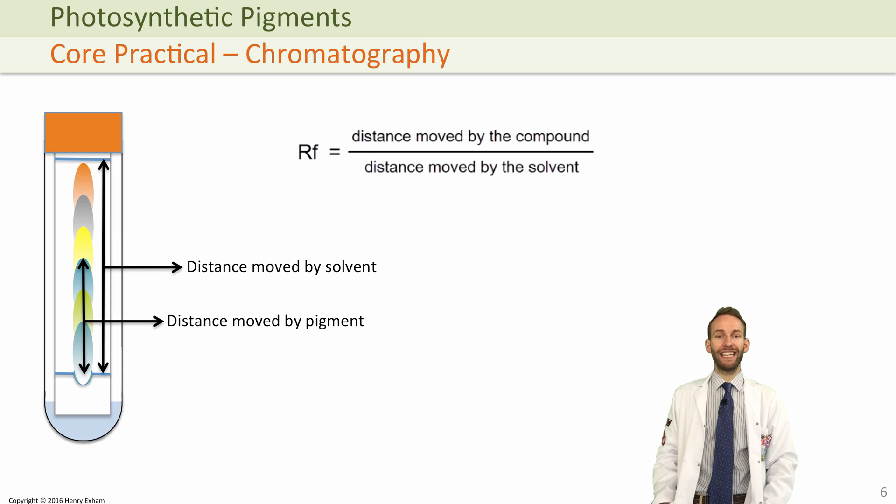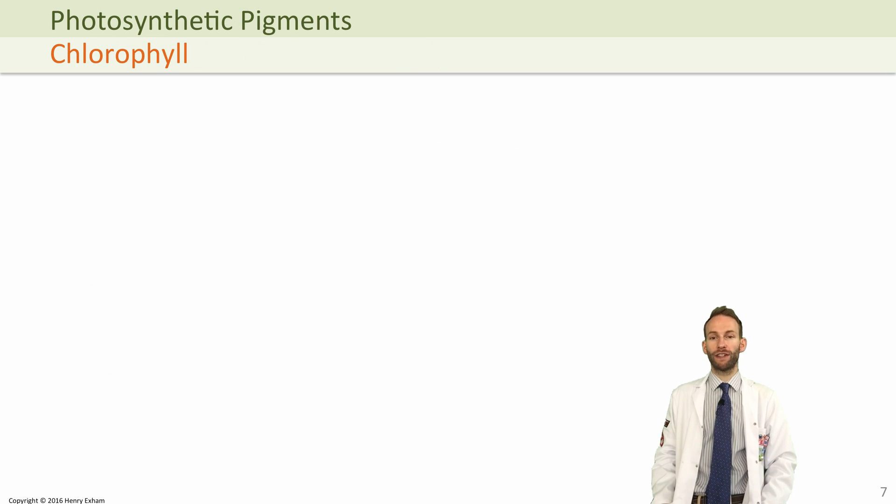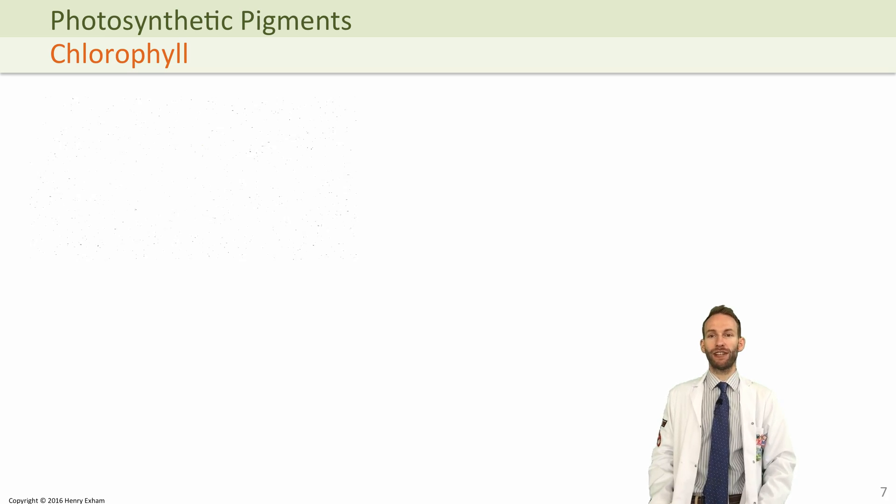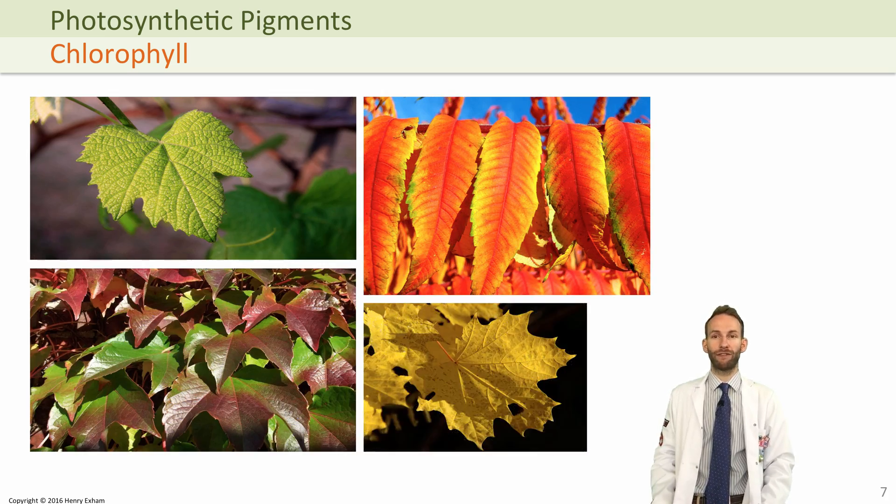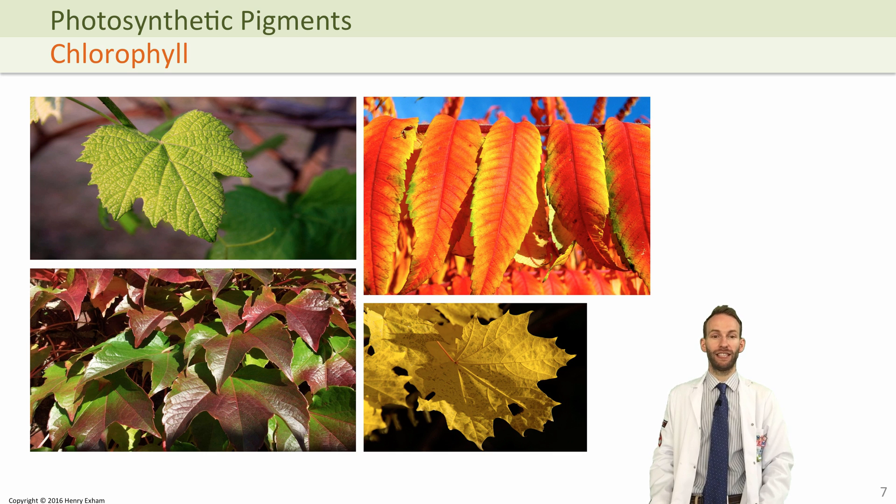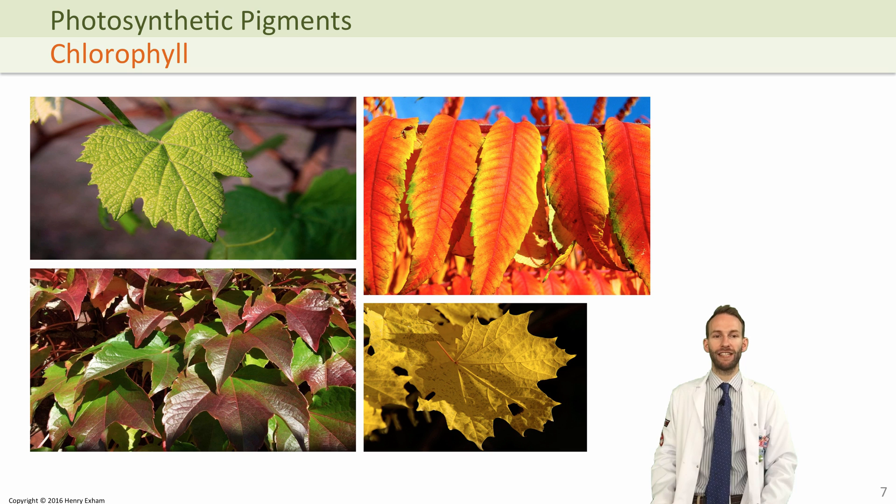So chlorophyll A is actually the most abundant and is found in all photosynthesizing plants. But other plants vary hugely, and that's why you get such an incredible array of different variations in leaf color in nature, because of the different combinations of pigments they have in their leaves.